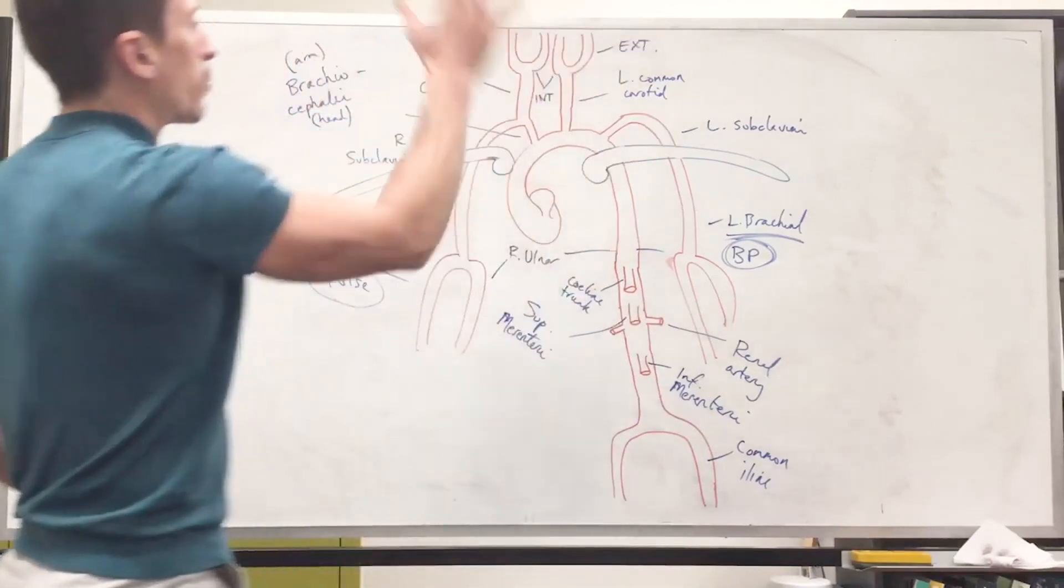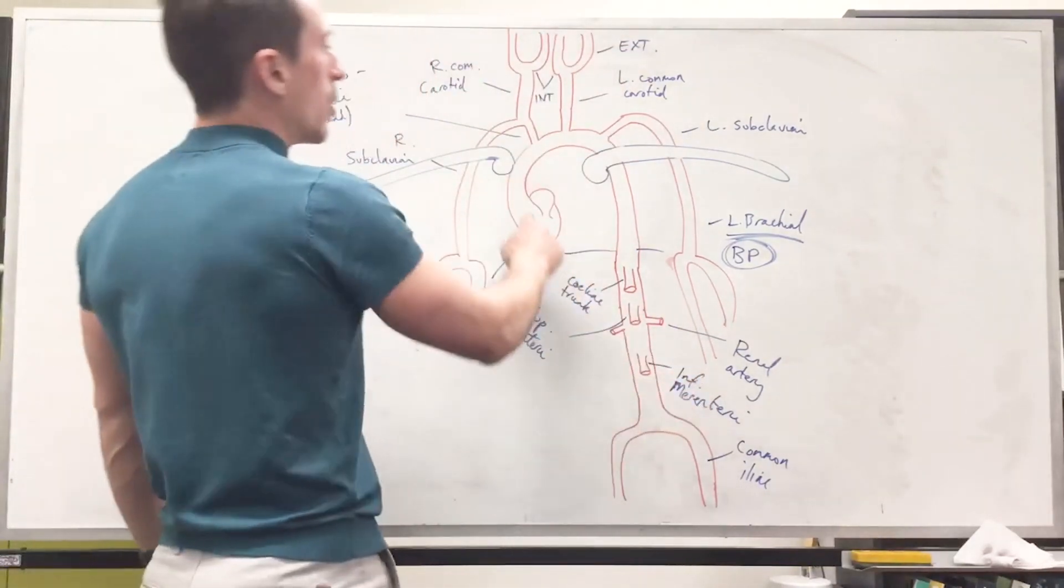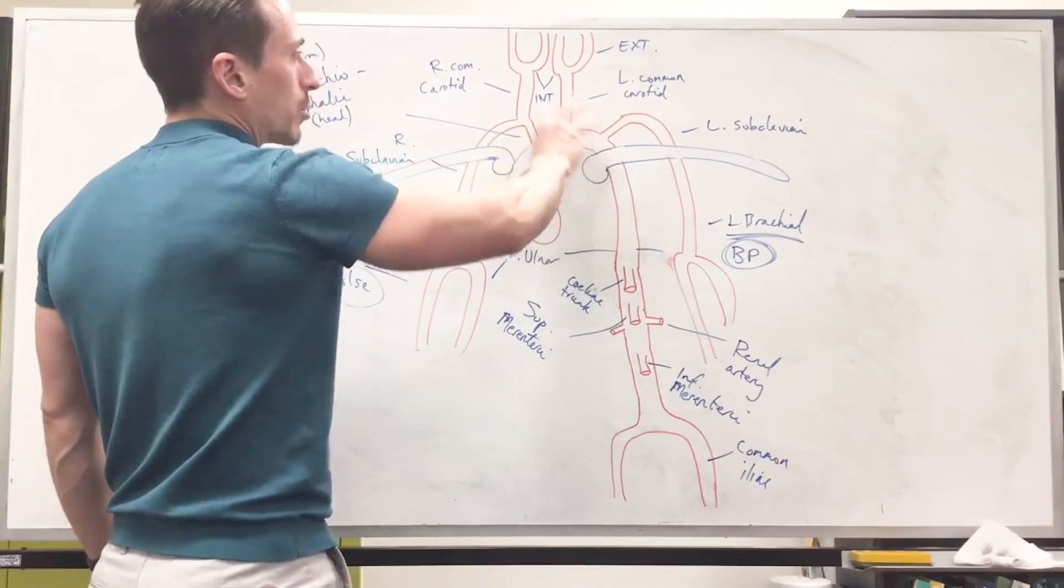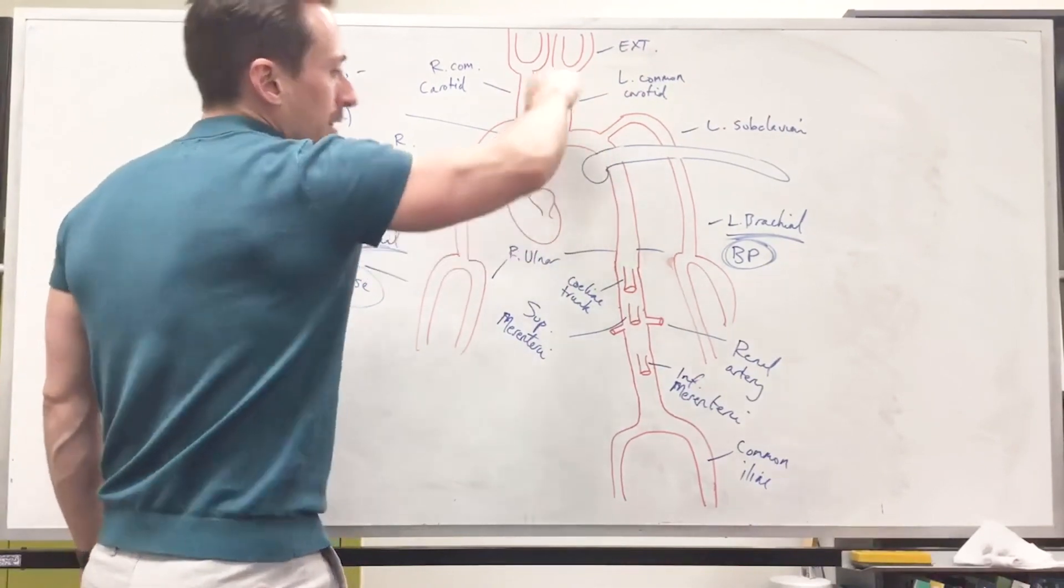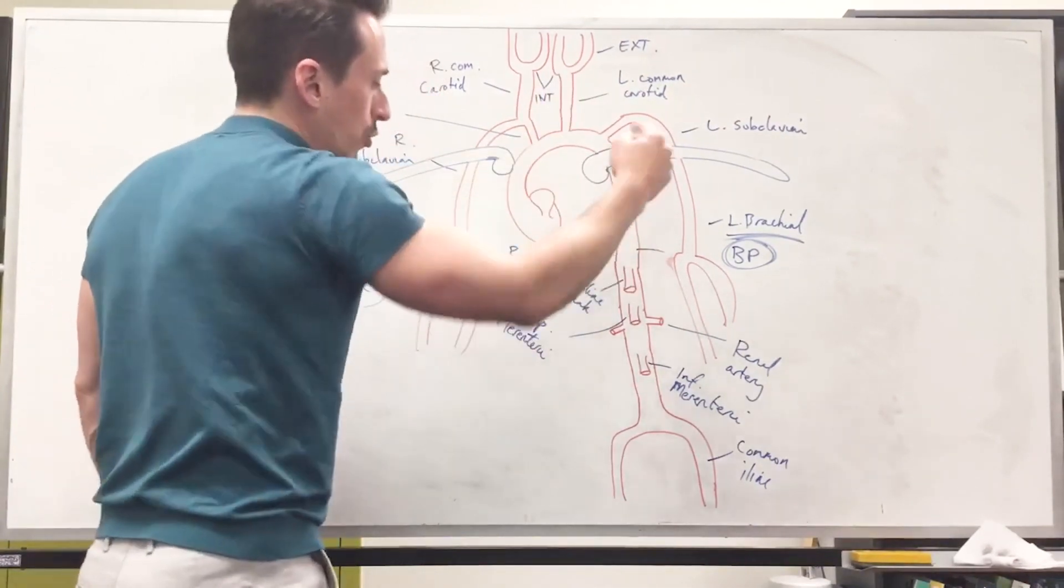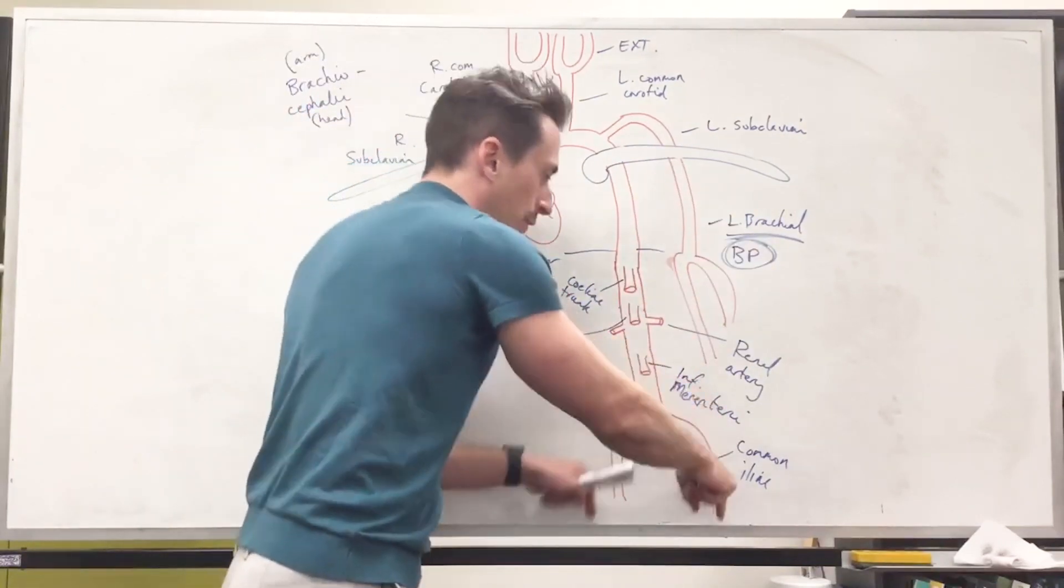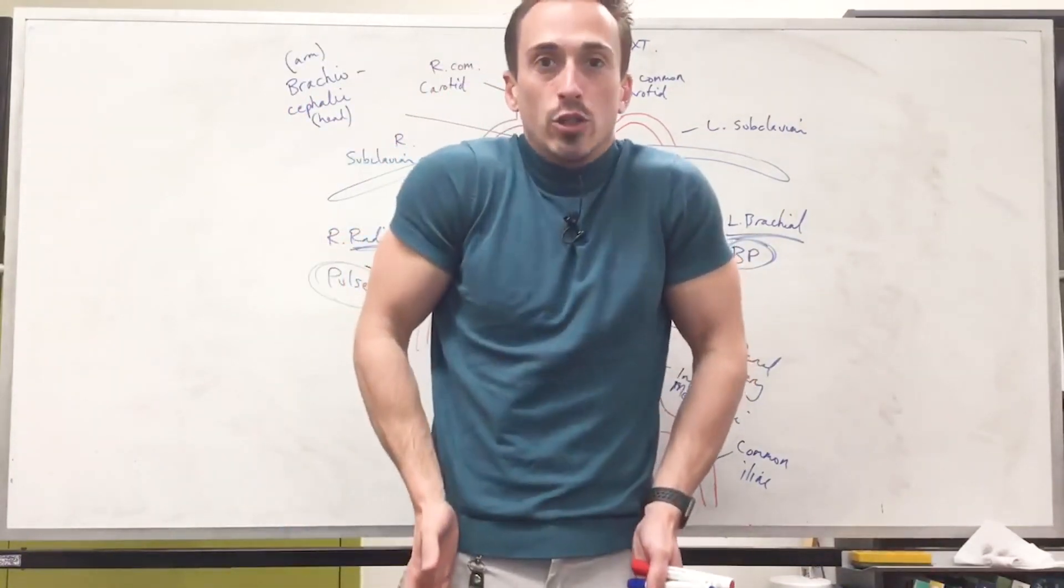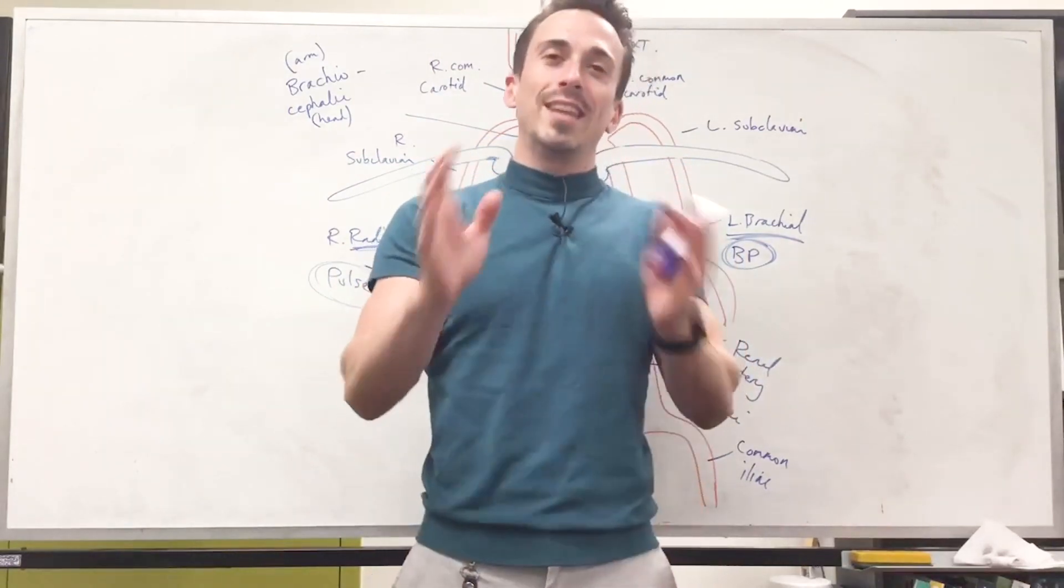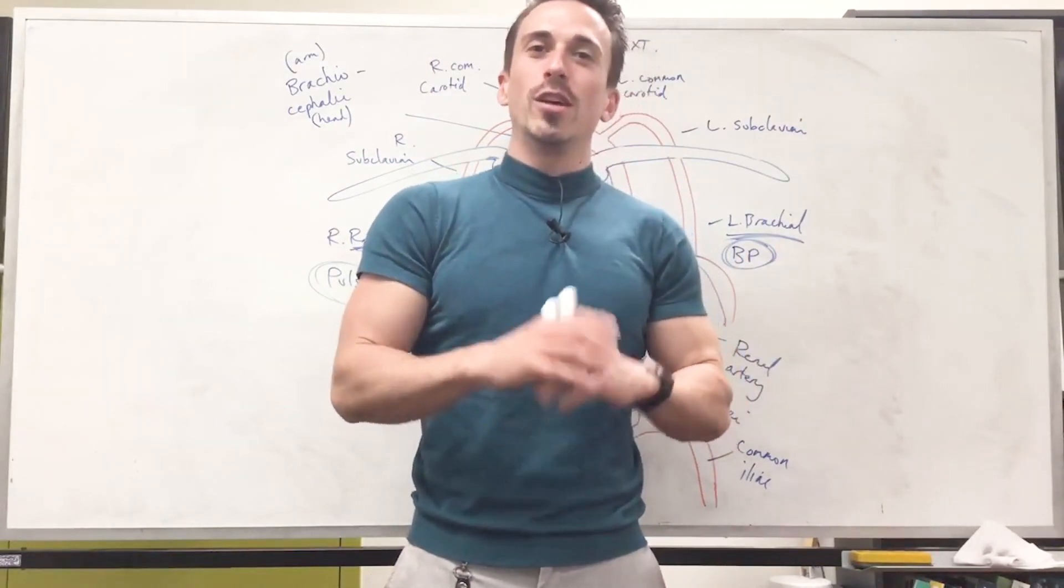Now, these are the major branches of the aorta. We've got the left ventricle pushing up the aortic arch, which is three main branches up the top. Then it goes down into the abdomen with celiac trunk, superior mesenteric, renal arteries, inferior mesenteric, and then branching for the common iliac as we go into our pelvis and legs. So these are the most common branches of the aorta.